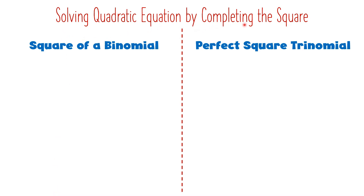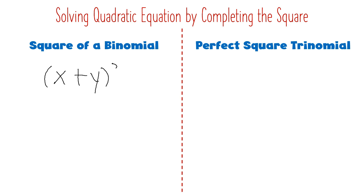Solving quadratic equations by completing the square. Before we proceed with this method, you have to know the square of a binomial and the perfect square trinomial and their relationship to each other. Because in completing the square, we have to make the quadratic equation a perfect square trinomial. This perfect square trinomial can be obtained from the square of a binomial. For example, let us use (x + y)², which is a square of a binomial.